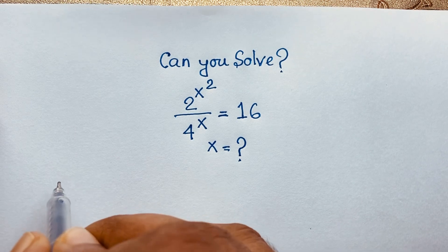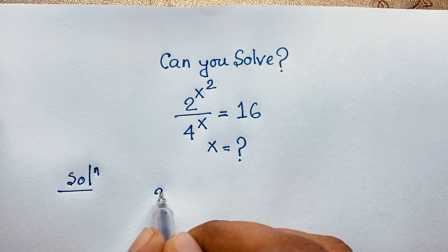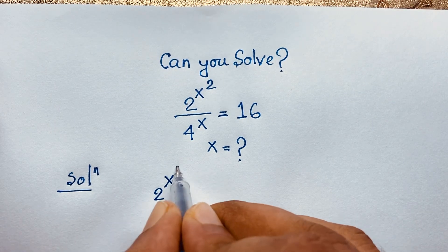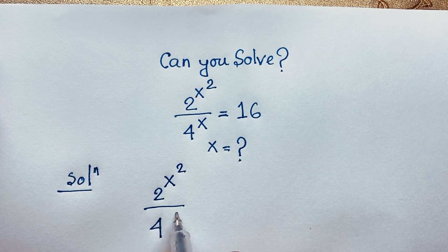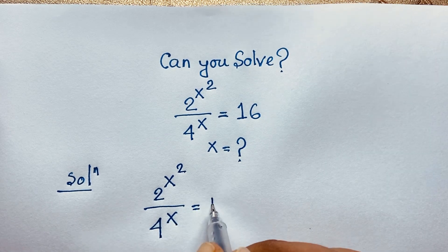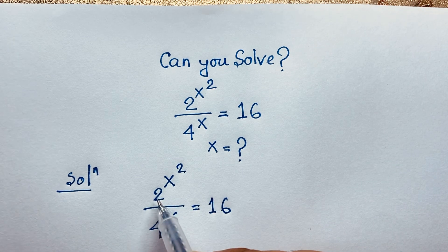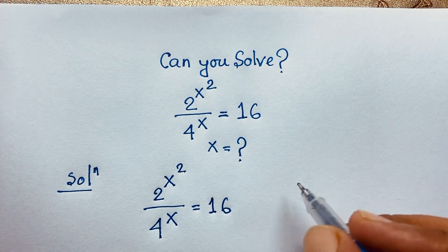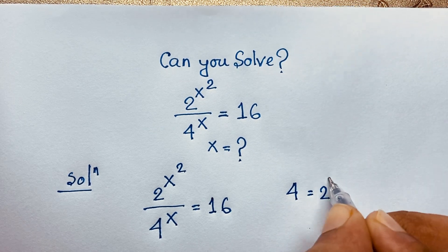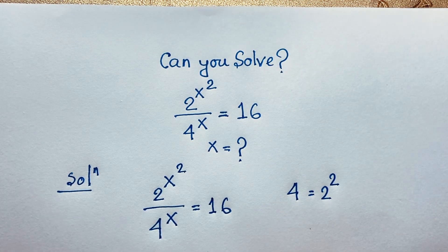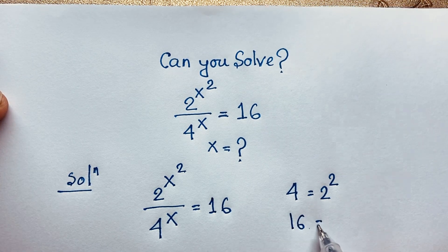So I will solve this question step by step. Our question is 2 to the power x squared over 4 to the power x is equal to 16. Now, here we have 2, 4, and 16. You can see that 4 equals 2 to the power 2, so I will use the exponential formula. And 16 equals 2 to the power 4.